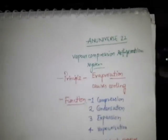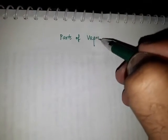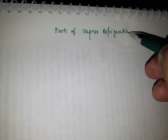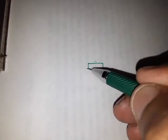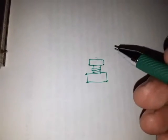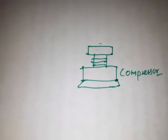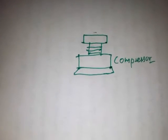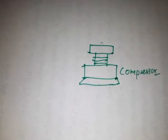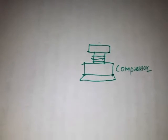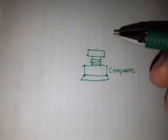Now we try to understand all the working with the help of a diagram. We will plot all the parts of the vapor refrigeration system. Firstly we plot the compressor. The function of the compressor is basically to suck the refrigerant vapors at low temperature and low pressure from the evaporator.